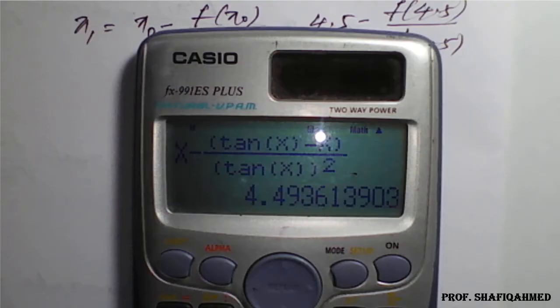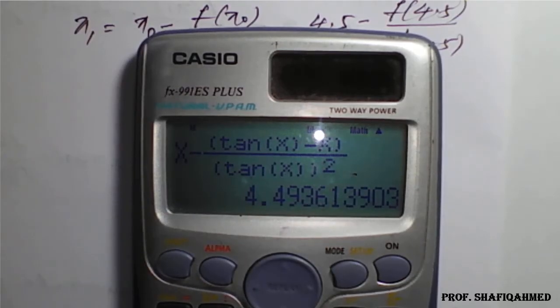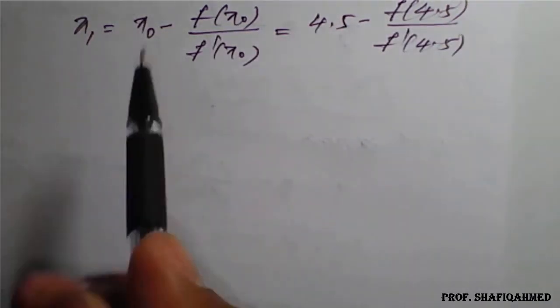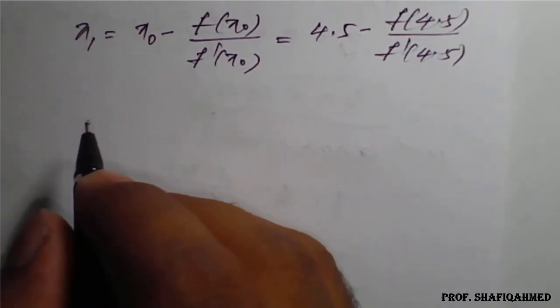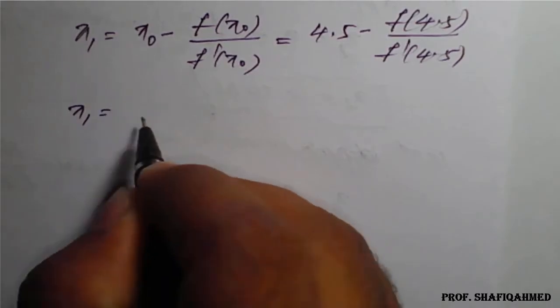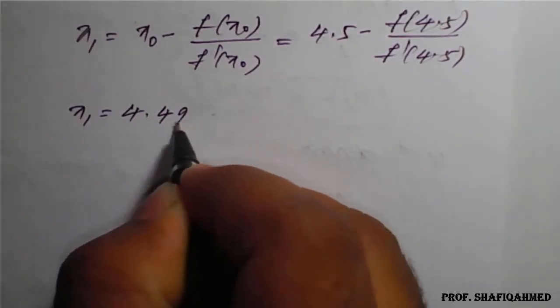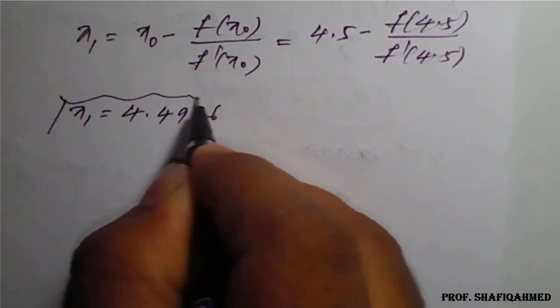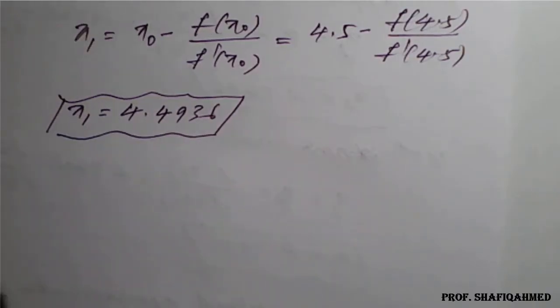Give the value of x as 4.5, and see the first answer as 4.4936. We will take the first approximation, x1 equals 4.4936.